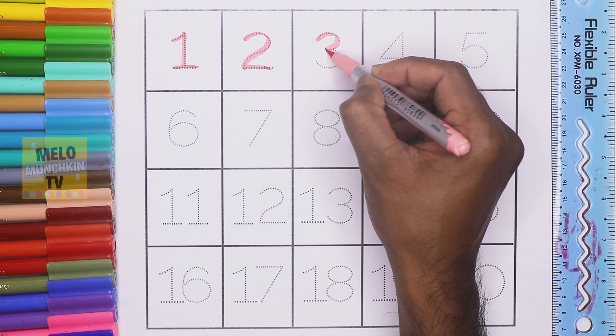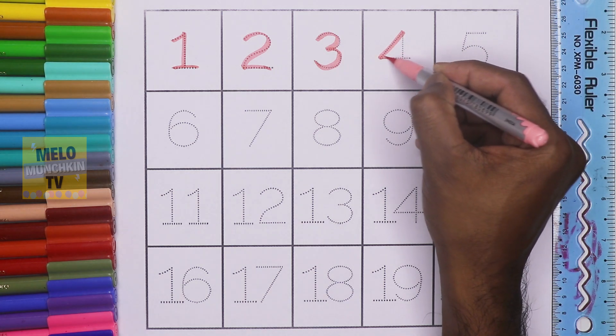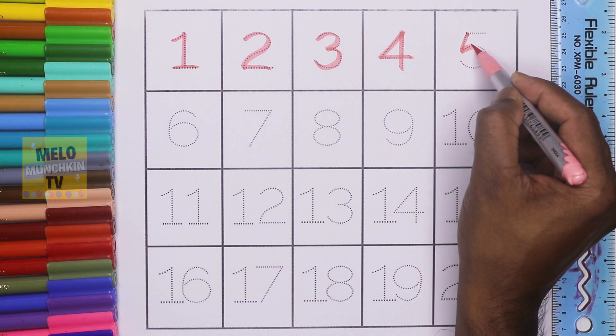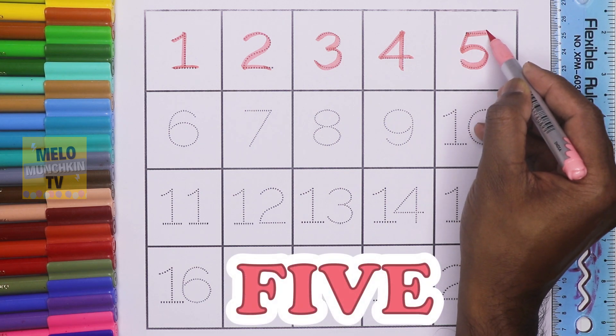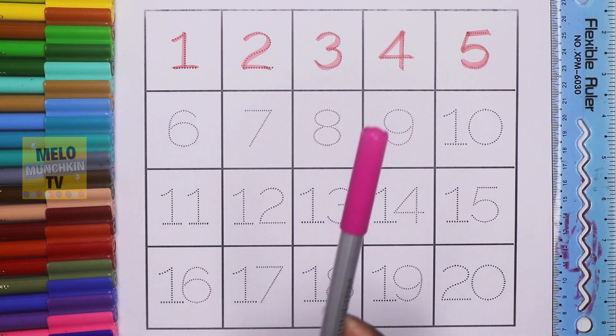This is number three, T-H-R-E-E, 3. This is number four, F-O-U-R, 4. This is number five, F-I-V-E, 5.